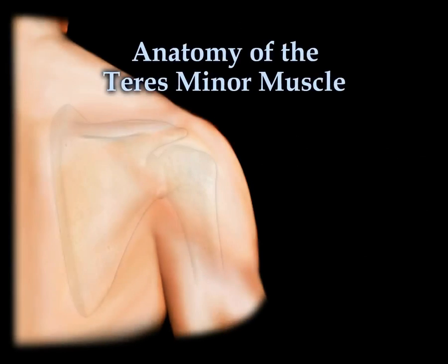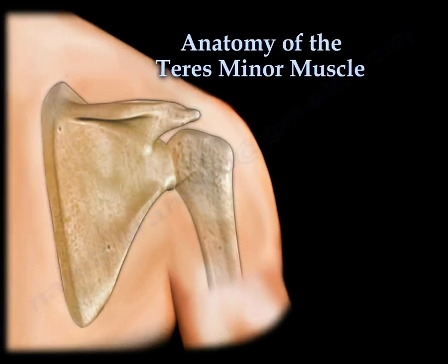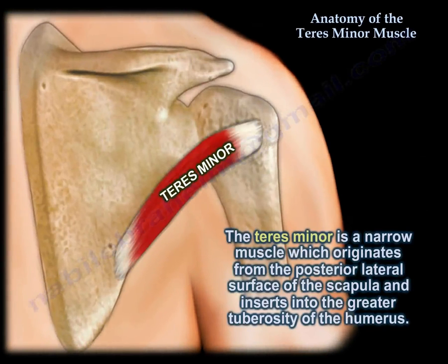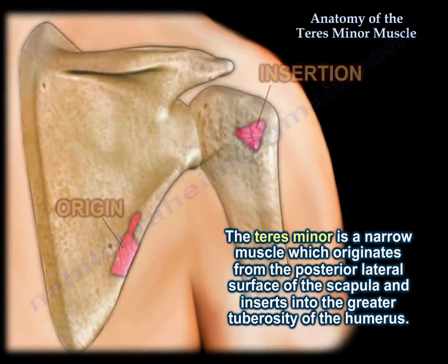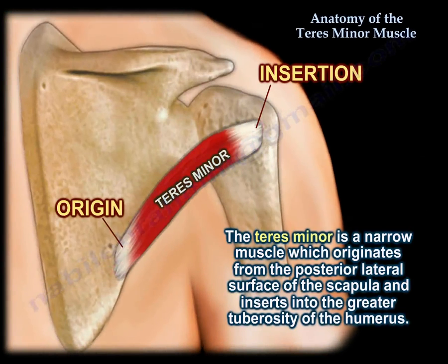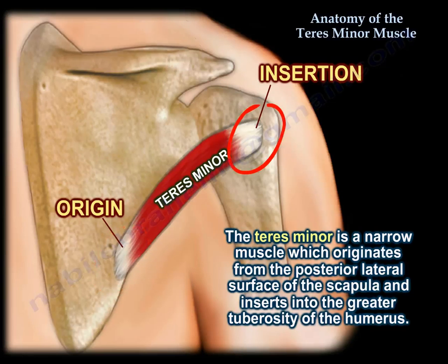Anatomy of the Teres Minor muscle. The Teres Minor is a narrow muscle which originates from the posterior lateral surface of the scapula and inserts into the greater tuberosity of the humerus. Here you can see the origin, here you can see the insertion, and the muscle itself.